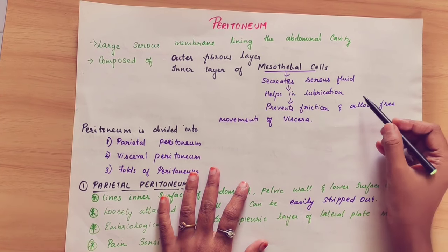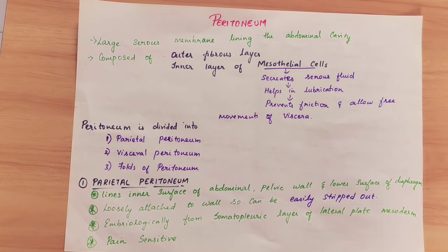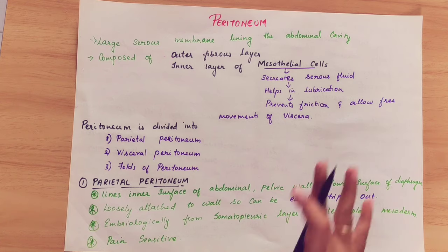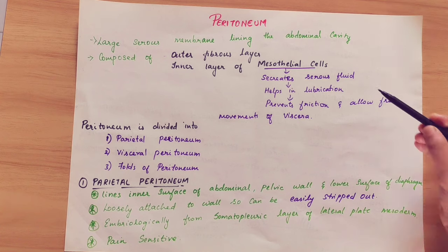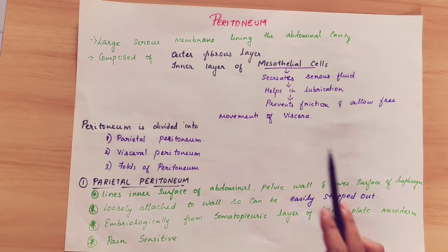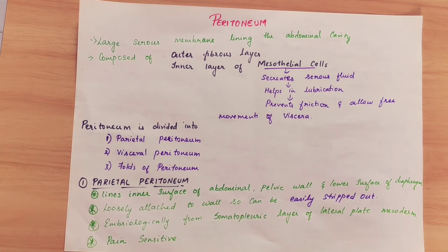The serous fluid acts as lubrication. It prevents friction between organs during visceral movements — for example, stomach and digestive movements. This liquid is produced within the peritoneum. It is a serous fluid which helps lubrication, prevents friction, and allows free movement of the viscera.